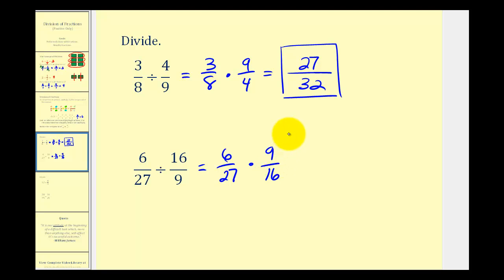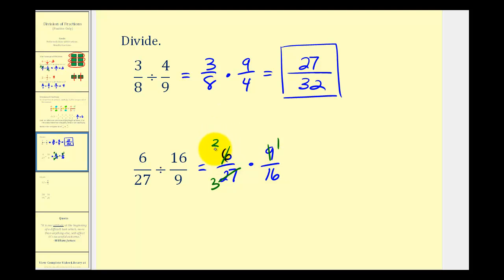Before we multiply, we do want to simplify. Nine and twenty-seven share a common factor of nine: nine simplifies to one, and twenty-seven simplifies to three. Six and sixteen also share a common factor of two — there are three twos in six and eight twos in sixteen. Notice we also have a common factor of three: three over three simplifies to one over one. Now we can multiply knowing the result will be in simplest form: the numerator is one times one, that's one, and the denominator is one times eight, which is eight.